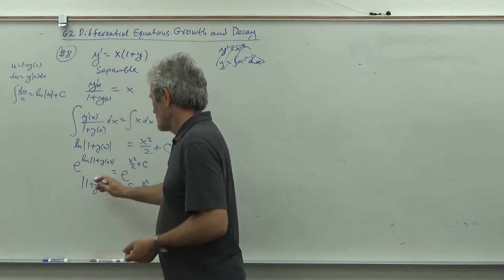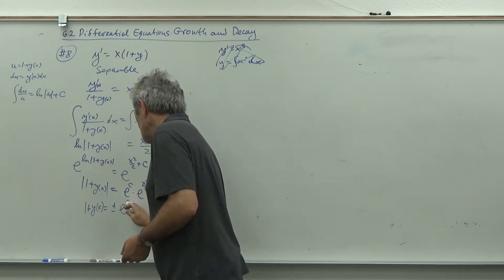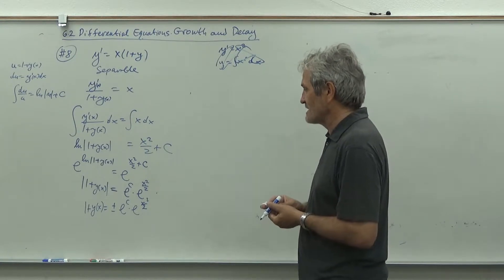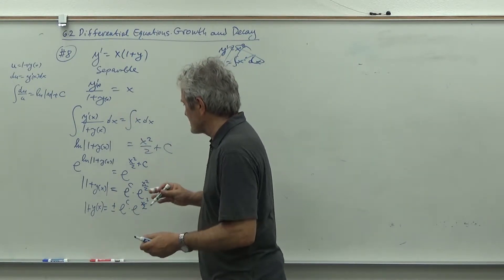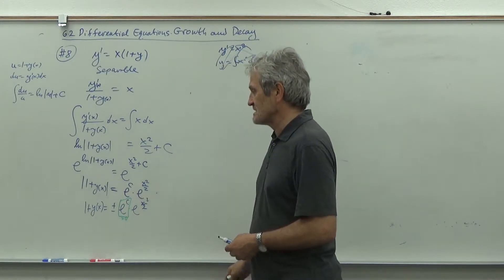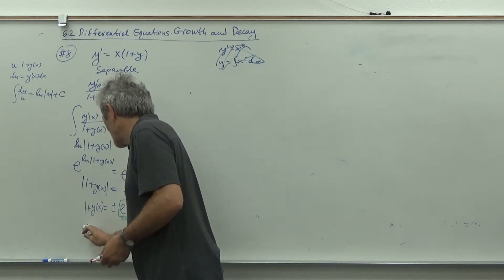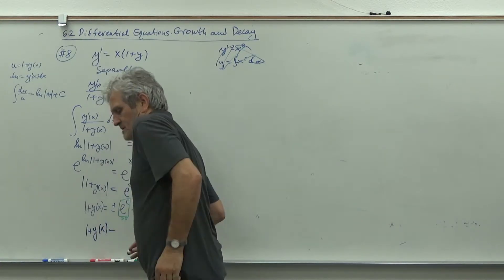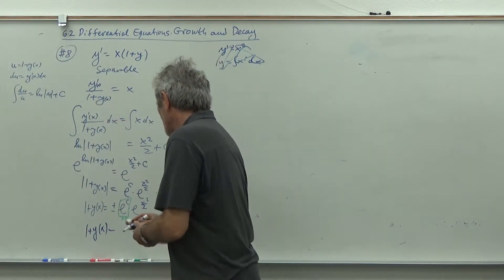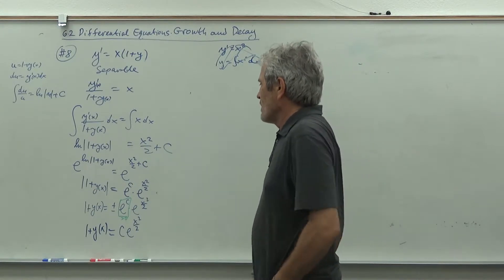We get absolute value of one plus y of x equals e to the C times e to the x squared over two. And then one plus y of x equals plus or minus e to the C times e to the x squared over two. Plus or minus because of the absolute value. But look how nice it is: e to the C is a constant, but it is a positive constant because e to the C is never negative. When you put plus or minus you get an arbitrary constant.